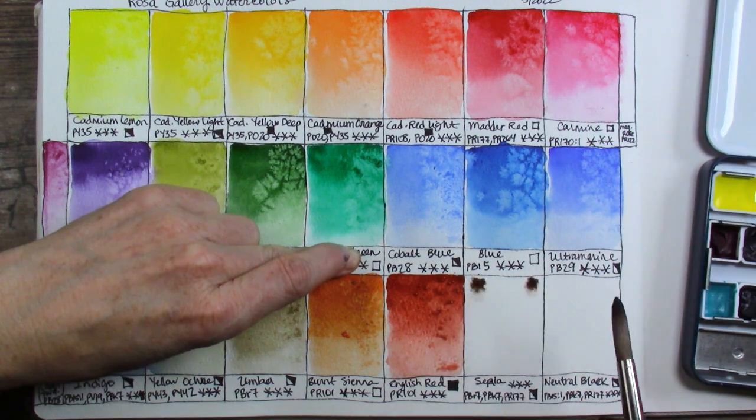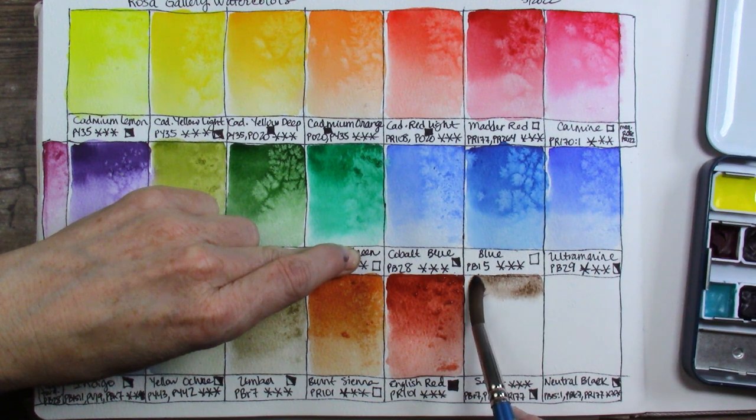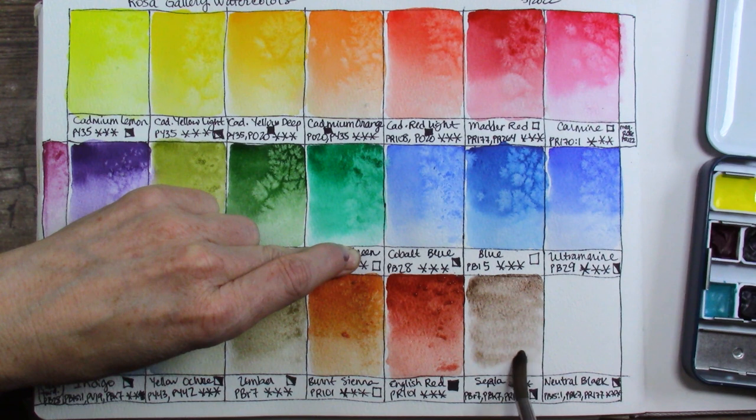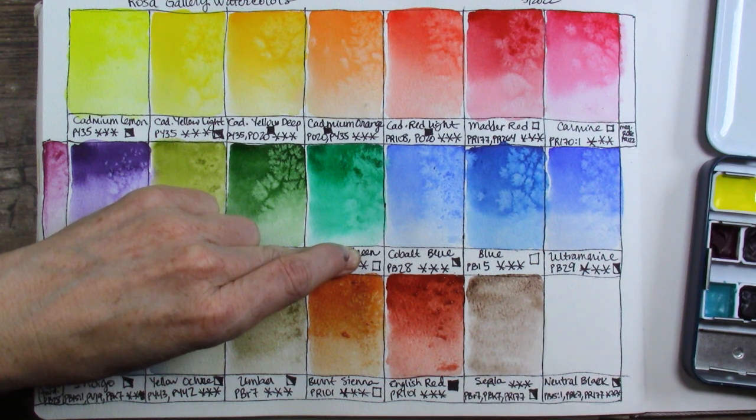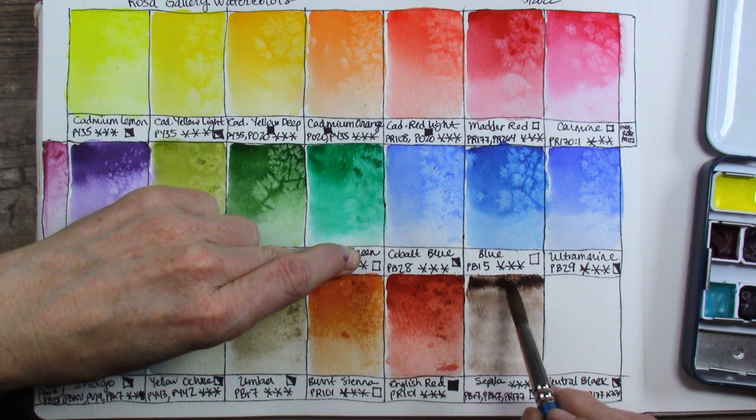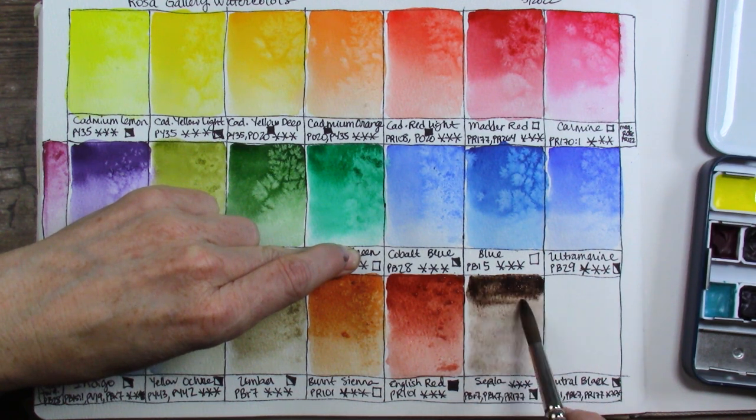Moving on to the sepia. I was curious if that was going to flow. It has PBR7, PBK7, and PR177. Three star lightfast rating semi-opaque and I really like it. It's a beautiful sepia. I used it a lot in my painting that you'll see later in this video. I keep saying that.